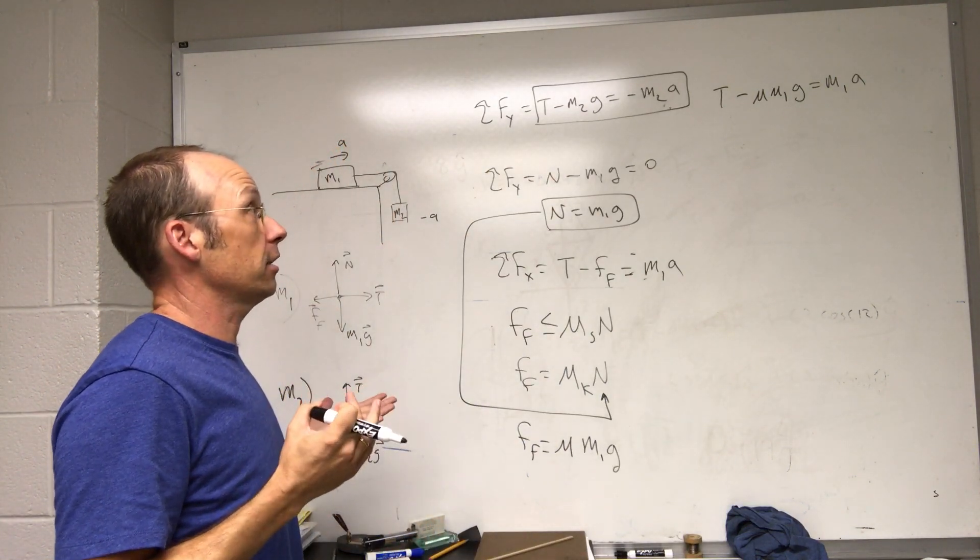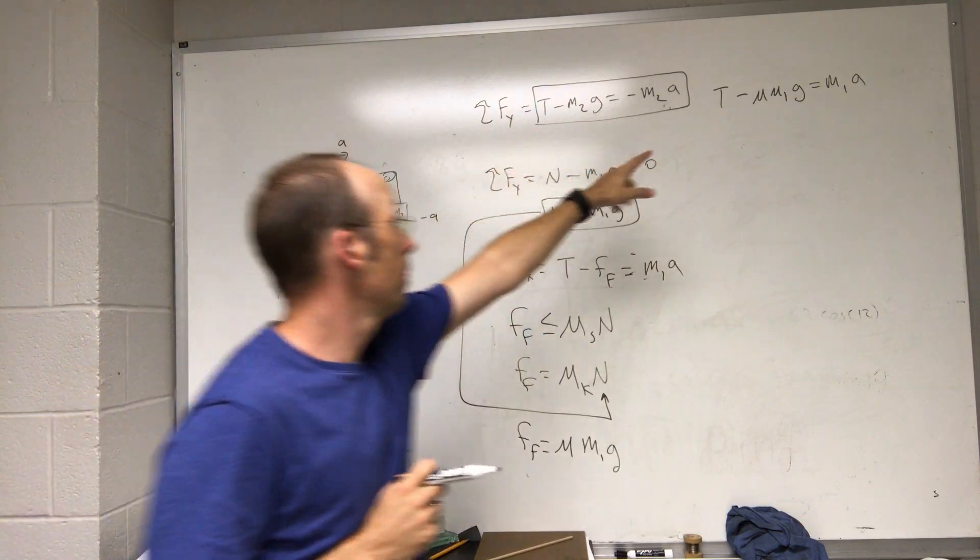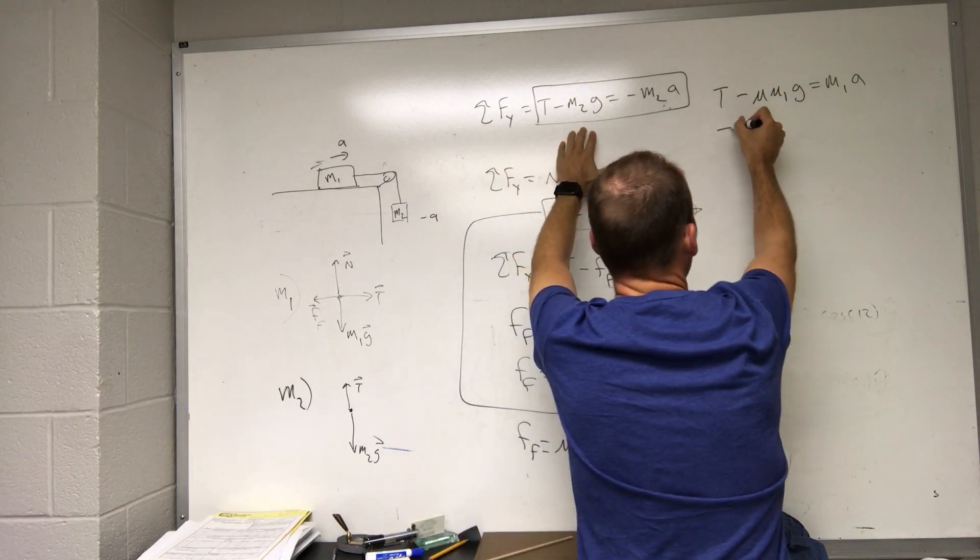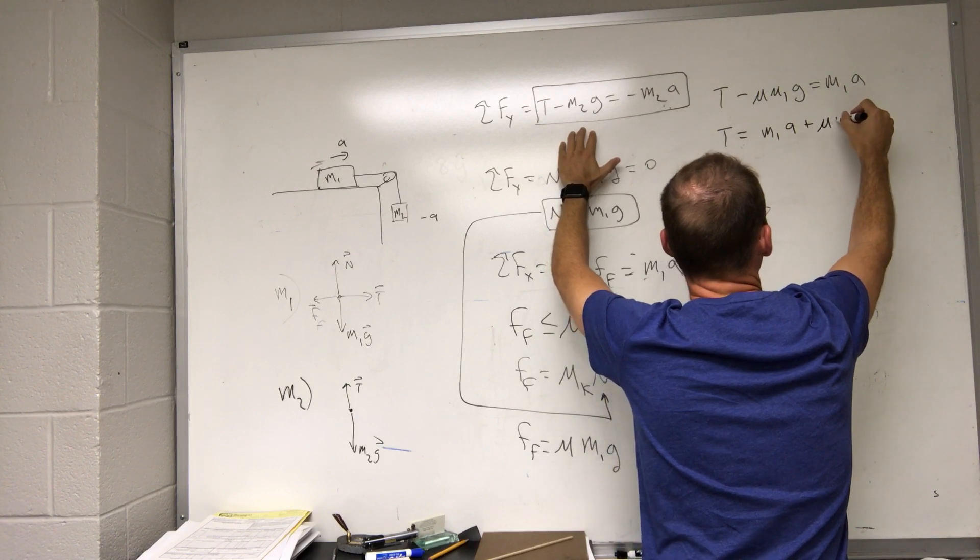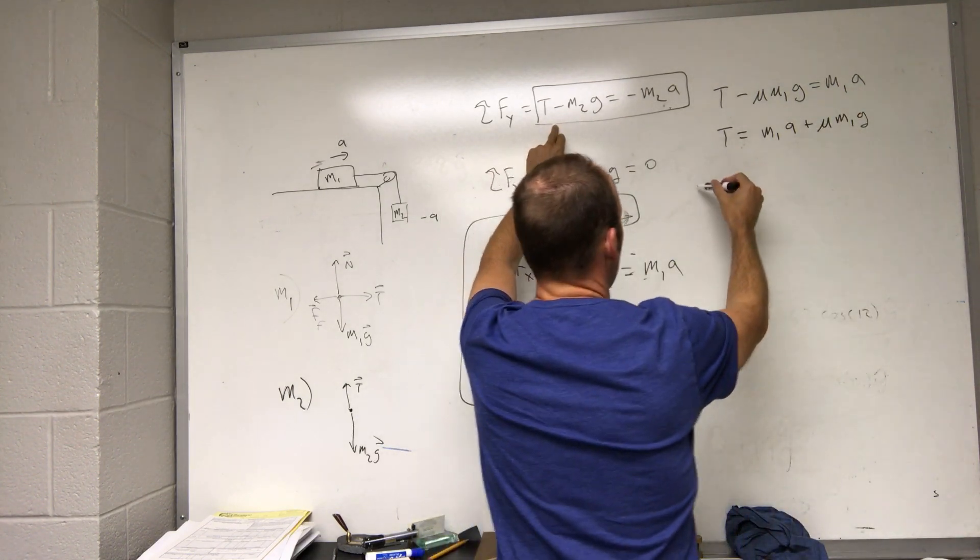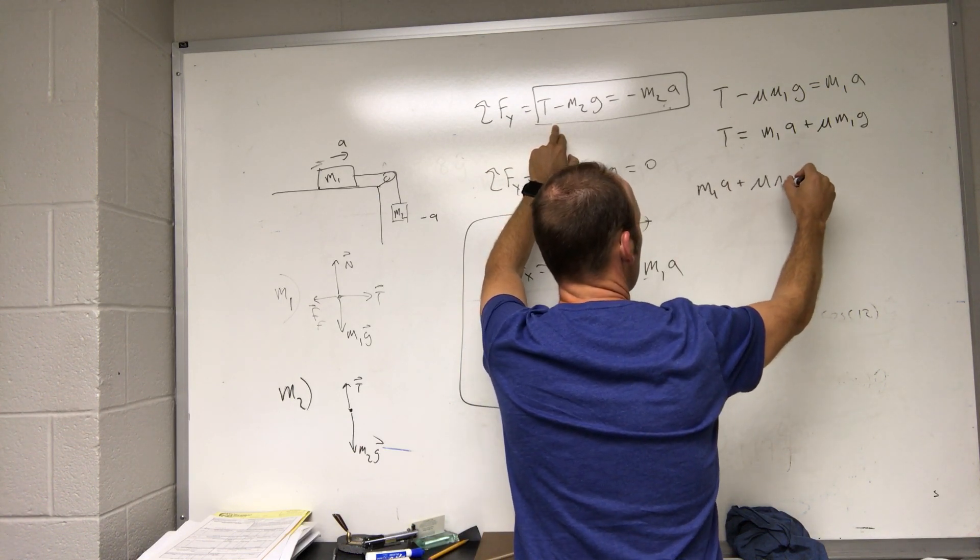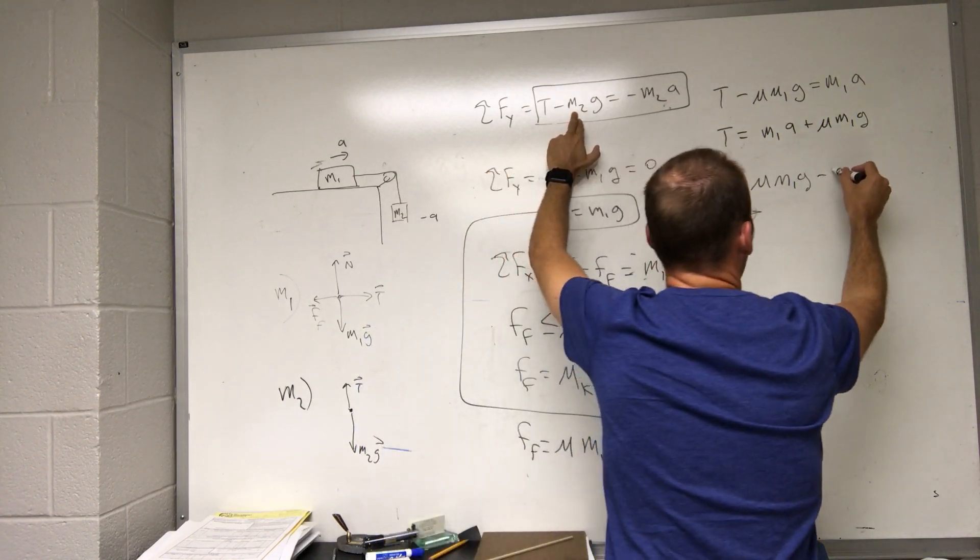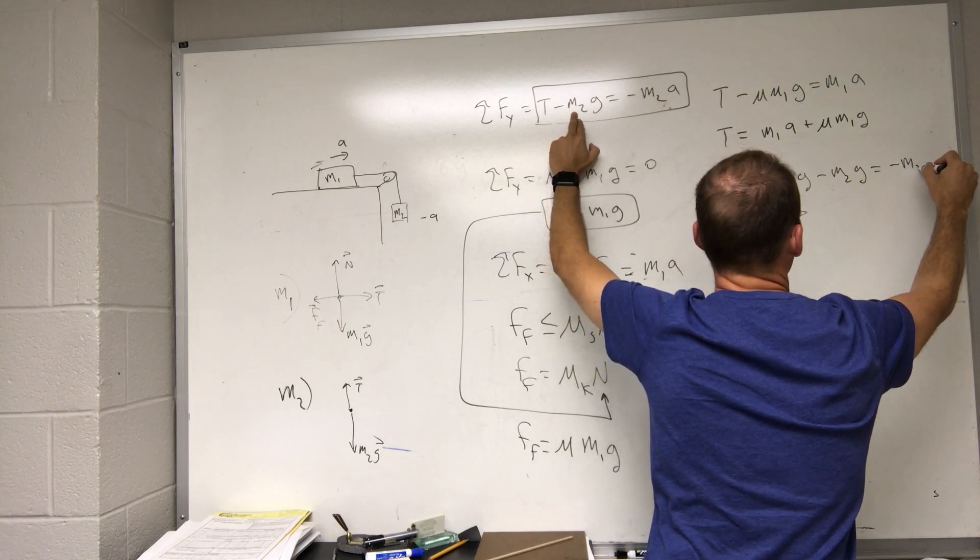I want to try to find that acceleration, so let me solve this one for T, plug it into there, and then I won't have an equation with no T. So here T equals m1 a plus mu m1 G. And if I substitute that in up here I get m1 a plus mu m1 G, that's the whole T part, I'm going to have minus m2 G equals negative m2 a.